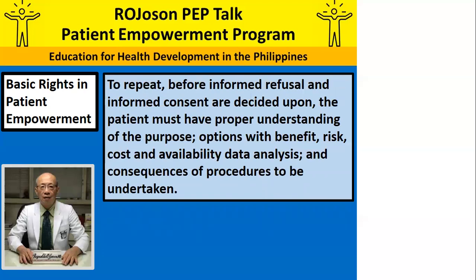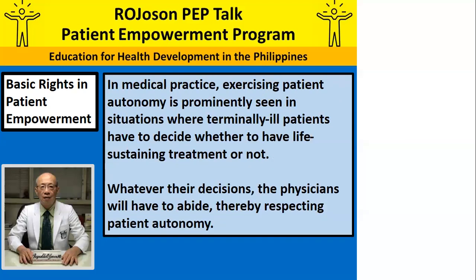Before informed refusal and informed consent are decided upon, the patient must have proper understanding of the purpose, options with benefit, risk, cost, availability data analysis, and consequences of procedures to be undertaken. In medical practice, exercising patient autonomy is prominently seen in situations where terminally ill patients have to decide whether to have life-sustaining treatment or not. Whatever their decisions, the physicians will have to abide, thereby respecting patient autonomy.